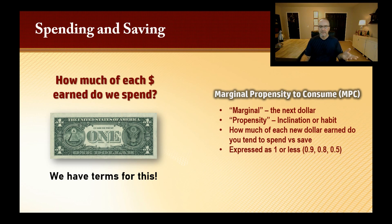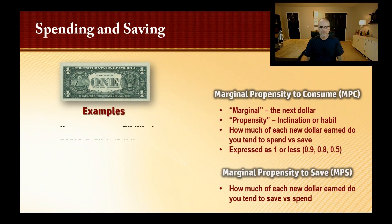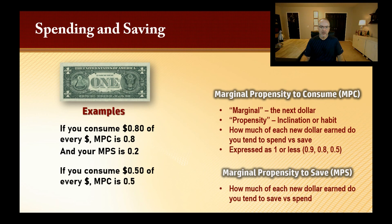The opposite of the MPC is the marginal propensity to save, or MPS — how much of every new dollar earned you tend to save. For example, if you consume 80 cents of every dollar, your MPC is 0.8 and your MPS is 0.2, because they must add up to one — you're either spending it or saving it. If you consume 50 cents of every dollar, your MPC is 0.5 and your MPS is 0.5.